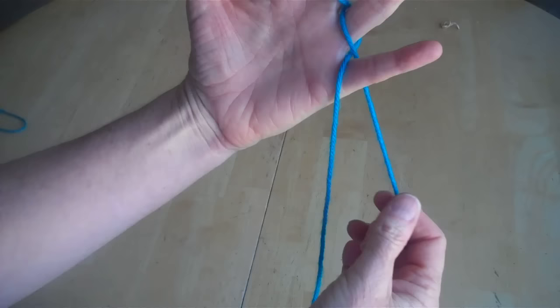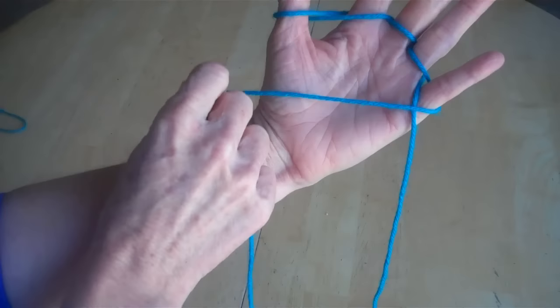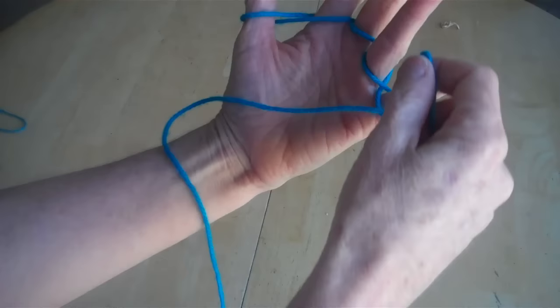Now here's the slightly tricky part, but it's not too bad. Take the string furthest away from you and hold it across your palm. Then take the other string, put it behind your ring finger.